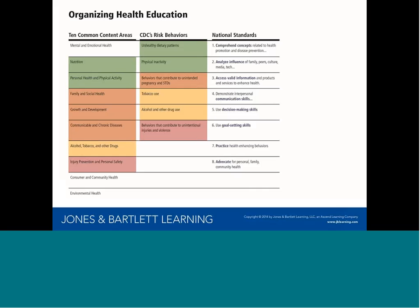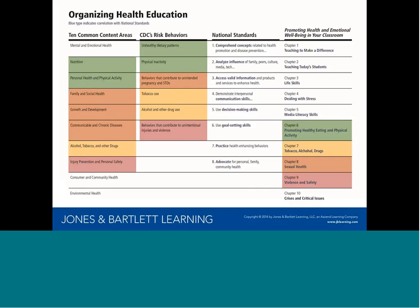Now I want to show you how we've made this easy to do. The column on the right shows how our book integrates the national standards into each chapter. The blue type shows how every chapter emphasizes the national standards skills. The first two chapters are foundation chapters, dealing with how to make a difference in the classroom and how to effectively include unit and lesson plan preparation. The next three chapters — three, four, and five — are all skill-based chapters that focus in-depth on the national standards skills. These skill-based chapters precede the risk behavior chapters that follow, so students can first master teaching these skills and be better prepared to integrate them into the risk behavior chapters.